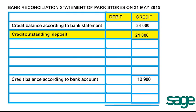It is also discovered that a deposit of R21,800 has not yet been brought into account by the bank. When we put deposits into the bank, that increases the bank's account. Therefore we put it onto the credit side of the reconciliation statement as an outstanding deposit of R21,800.